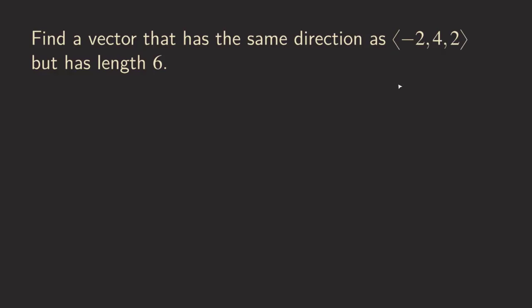Hello everyone, it's Wilson here. Today I want to talk about finding a vector that has the same direction as this given vector here and then has length six. So how do we do it? The idea is really simple. The first thing is that we are going to give this vector a name.